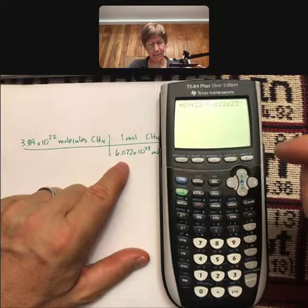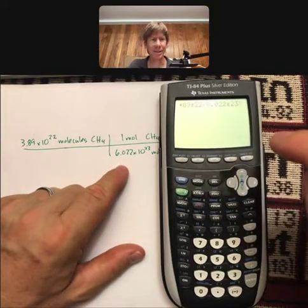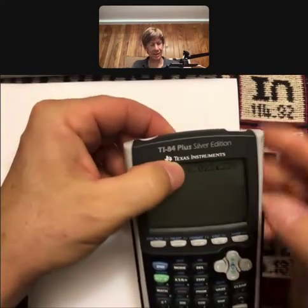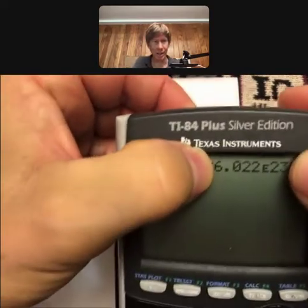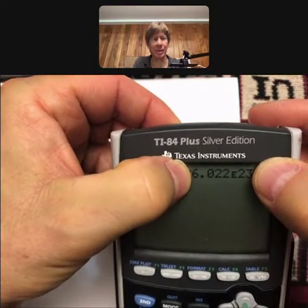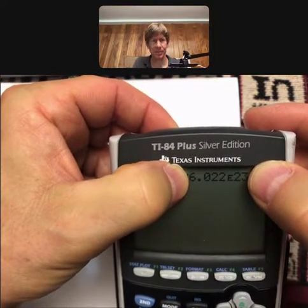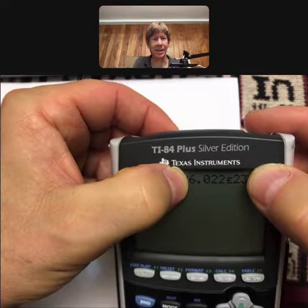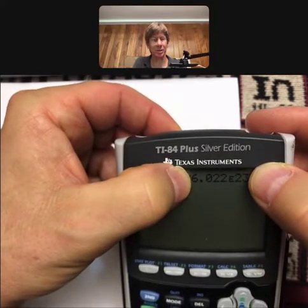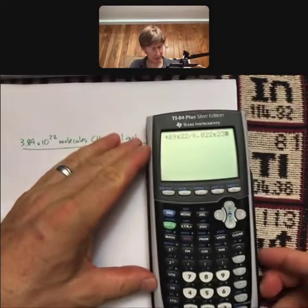And what the EE button does when it puts that E in there is it keeps, it recognizes this thing as one number. So you don't have to worry about order of operations. You don't have to worry about parentheses. You don't have to worry about adding an extra power of 10 when you do times 10 to that. All those issues go away. So then I hit enter.